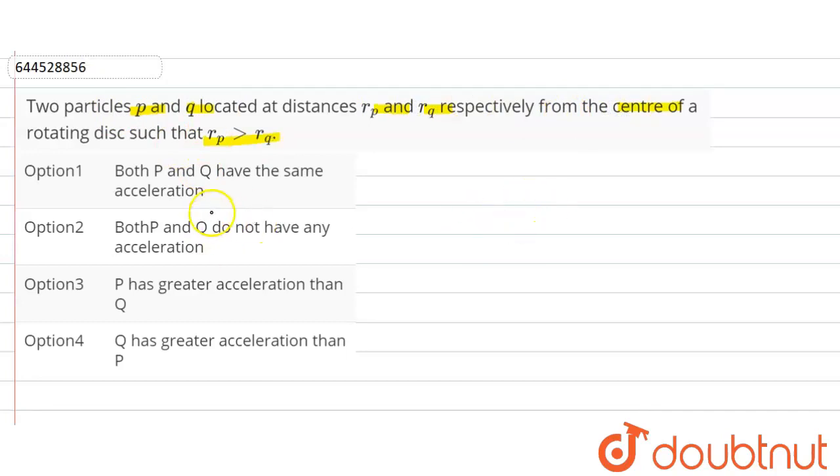We have to find here, four options are given: both P and Q have same acceleration, both P and Q do not have any acceleration, and we have to find the relation between the acceleration of P and Q.